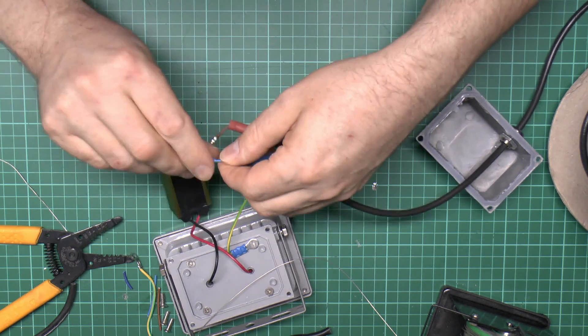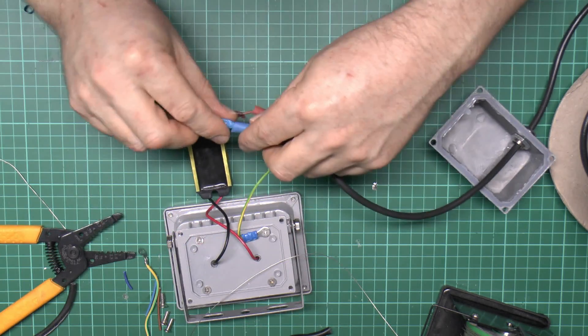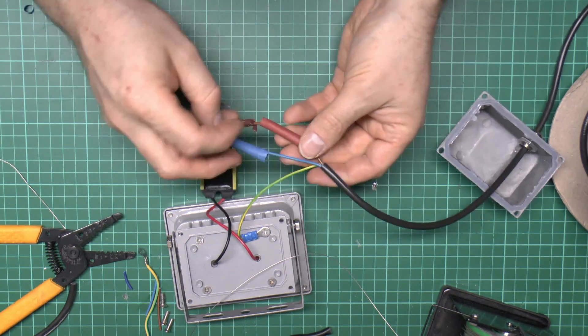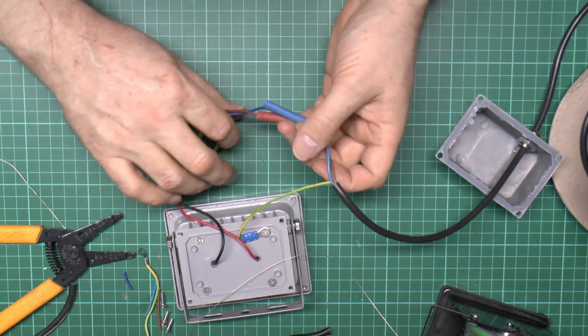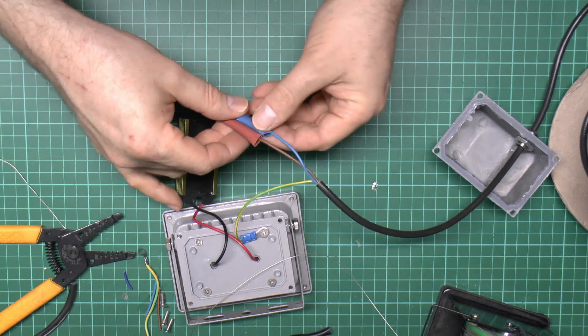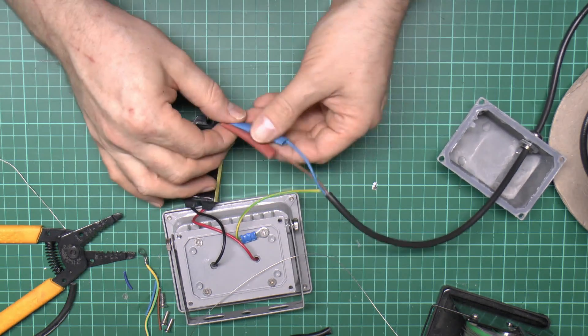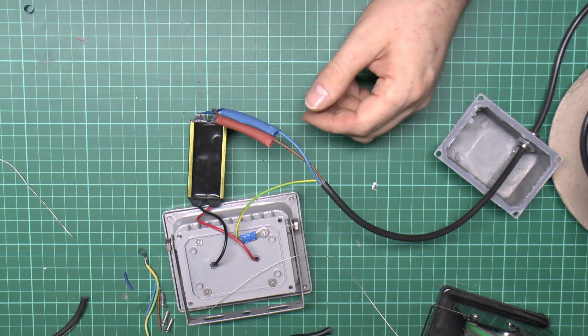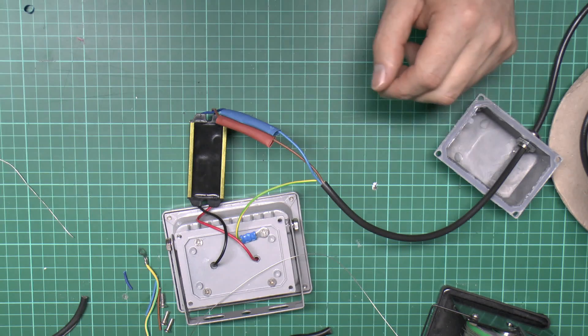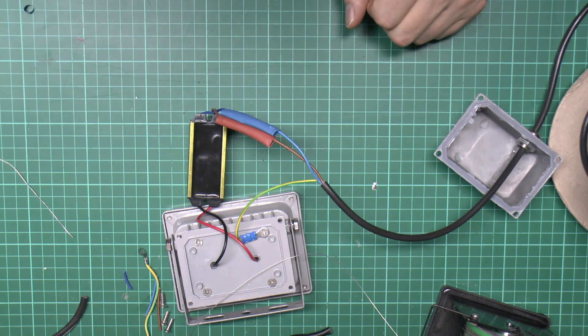We could just shove the sleeving over but because solder may have some sharp pointy bits, what we'll do is put a bit of tape over that to start with. Again we can use the proper colors here. There's no particular need to use the right colors but because we can, we will. We'll cover that with the tape to start with. We'll seal it there and then slide the whole lot over there. Over there like that.